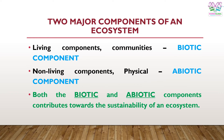Based on the previous slides, we learn there are two major components of an ecosystem. These are the living components, or communities — also known as the biotic component. The other component is non-living components, which can be physical: air, sand, soil, and so on. These are known as abiotic components.